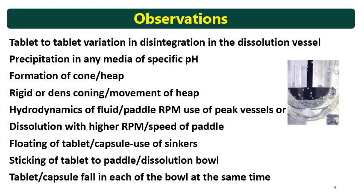The heap should be observed — whether it is rigid and dense or whether it is moving. This is very important. Some formulations are made with a tablet weight of around 1000 mg, and those tablets may form a heap that moves slowly or may be rigid. Based on that coning, you can observe whether the hydrodynamics are sufficient. Based on the hydrodynamics, paddle RPM can be selected or increased, or a peak vessel or higher paddle speed can be used.